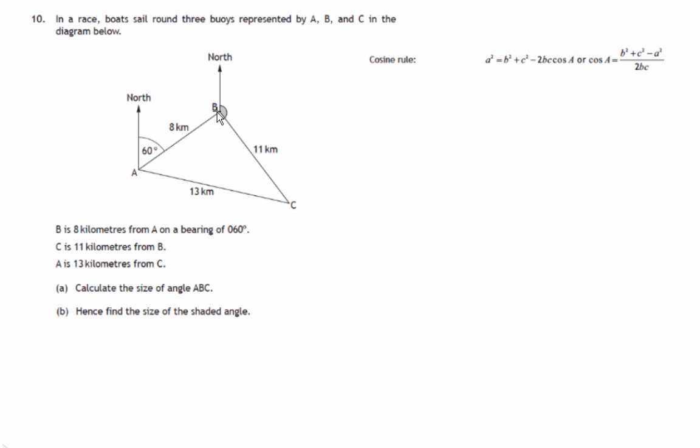We're told that B from A is on a bearing of 60 degrees. And we're asked to find the size of angle BAC in this triangle. Now you'll notice in this triangle we have all three sides given to us.